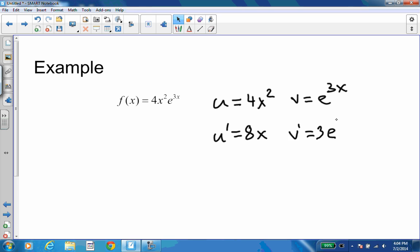So f prime will be u prime, which is eight x, times e to the three x, plus u, which is four x squared, times our v prime, which is three e to the three x.